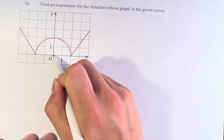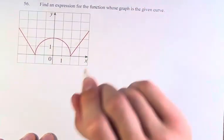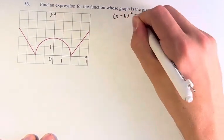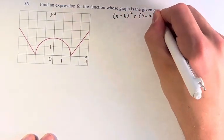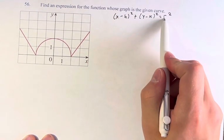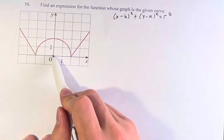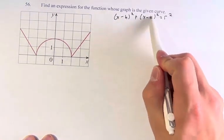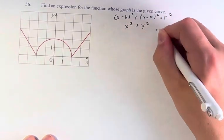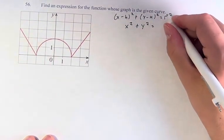The center of the circle we can see is the origin. So for our general circle formula, we have (x - h)² + (y - k)² = r². h,k is the center, r is the radius. The center is 0,0, so this is x minus 0 and y minus 0. So it's just x² + y² equals the radius squared.